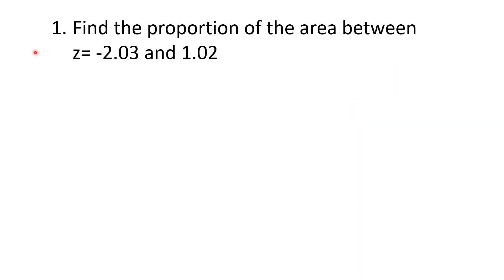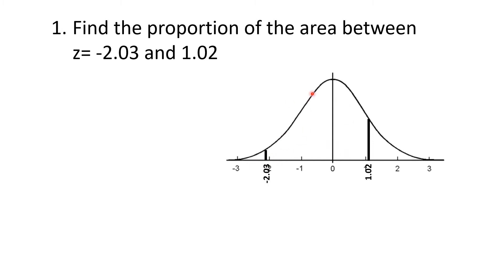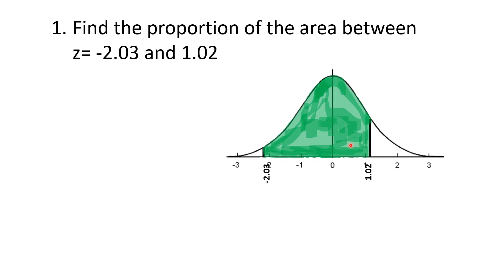Let's have an example. Find the proportion of the area between z equals negative 2.03 and z equals 1.02. First, draw a normal curve and locate the points. Negative 2.03 is approximately here — draw a vertical line. Z equals 1.02 is approximately here — draw a vertical line. Since the keyword is 'between,' shade the region between the two vertical lines.